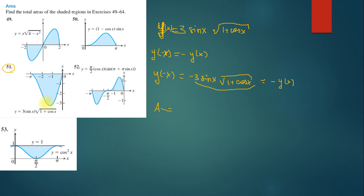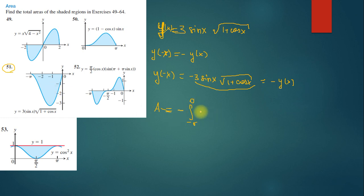Since the graph is below zero on part of the interval, when I find the integral from -π to 0, I put a minus sign in front. So I write: minus integral from -π to 0 of 3sin(x)√(1 + cos(x)) dx.